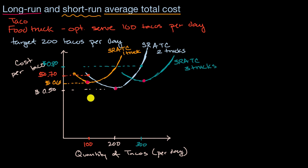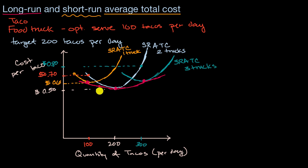Your long-run average total cost curve would be connecting those dots — the minimum points of each short-run curve. Some might wonder about producing quantities between those round numbers, but in the long run you might be able to get custom truck sizes. The big takeaway is that your long-run average total cost curve is the envelope of all the minimum points of all your various short-run average total cost curves, because for any given quantity you want to optimize your fixed costs.